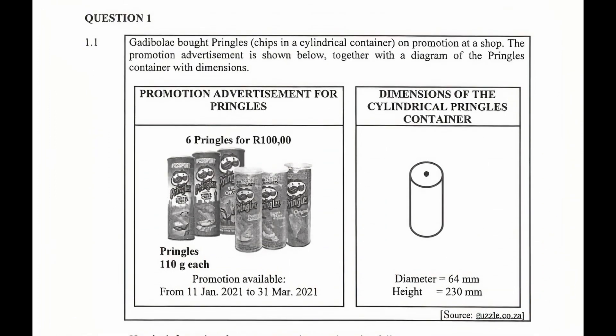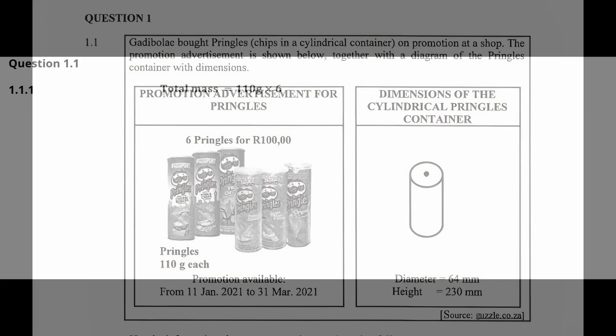From the advertisement, each Pringles container has a mass of 110 grams. So the total mass of the Pringles promotion is 110 grams multiplied by six Pringles containers, and this equals a total mass of 660 grams.